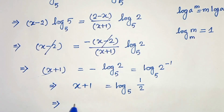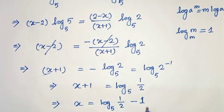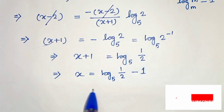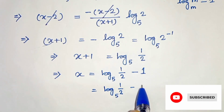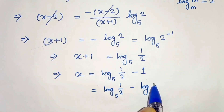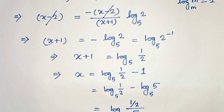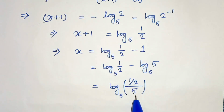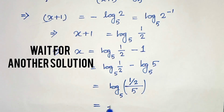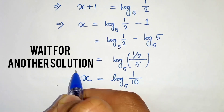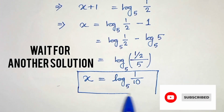So x equals log base 5 of (1/2) minus 1. And 1 can be written as log base 5 of 5, since log base m of m equals 1. Since they have the same base, we can write x equals log base 5 of (1/2 divided by 5), which gives x equals log base 5 of 1/10. This is our solution.